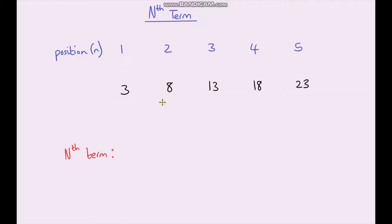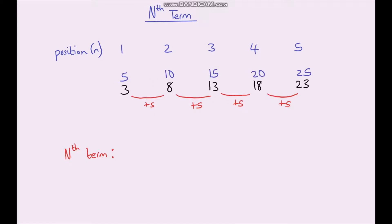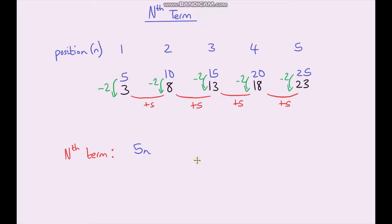Let's do another one. This is our next sequence and I'd like to find the nth term. Between 3 and 8 we're adding on 5, and again between 8 and 13 we're adding on 5 — this is the case throughout. So we're going to be using our 5 times table. Now what adjustment are we making? To go from 5 to 3 we're subtracting 2, and from 10 to 8 we're also subtracting 2. So our nth term is 5n minus 2.